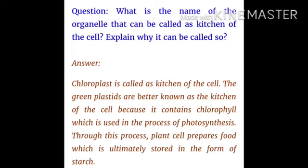Now, some questions. What is the name of the organelle that can be called the kitchen of the cell? Explain why. Chloroplast is called the kitchen of the cell. The green plastids are known as the kitchen of the cell because they contain chlorophyll, which is used in the process of photosynthesis. Through this process, plant cells prepare food, which is ultimately stored in the form of starch.